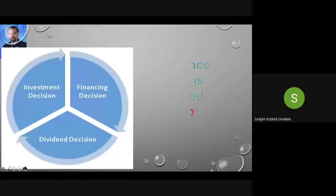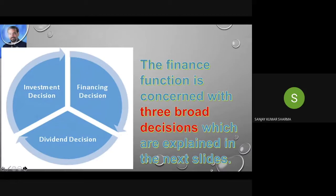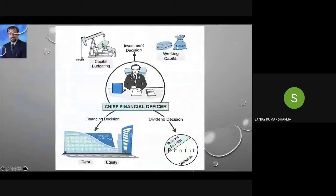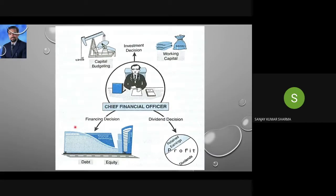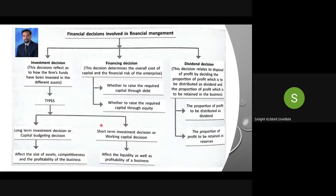Financial decisions basically have three things: investment decision, financing decision, and dividend decision. We have completed the investment part. Now financing decision means from where the money will come. Financing decision is all related to the decisions which will determine the overall cost of capital and the financial risk involved.